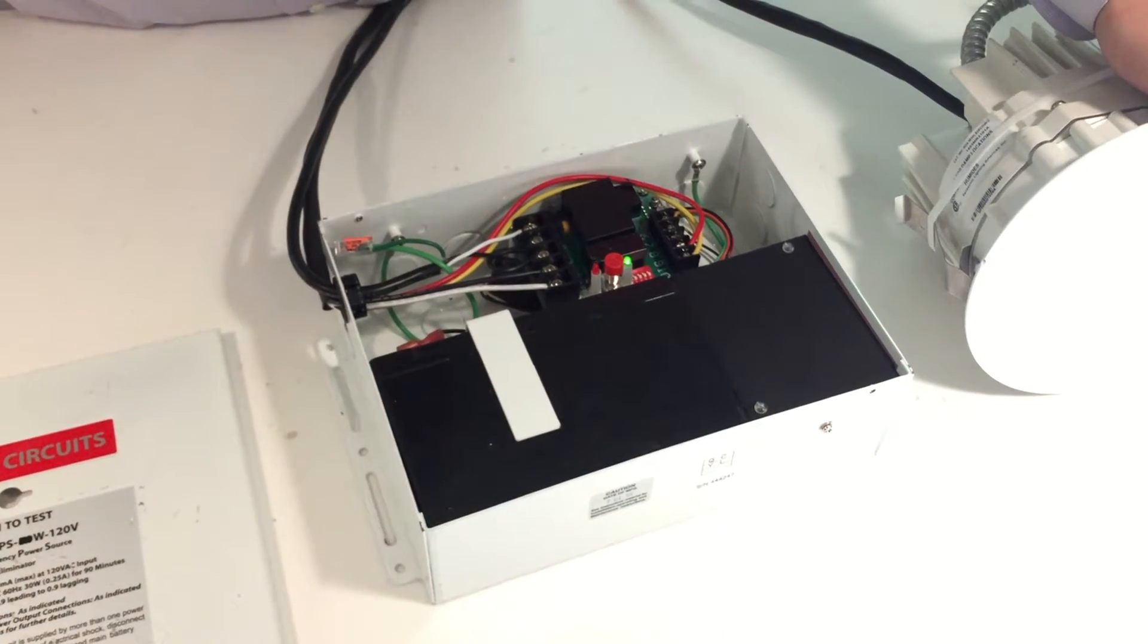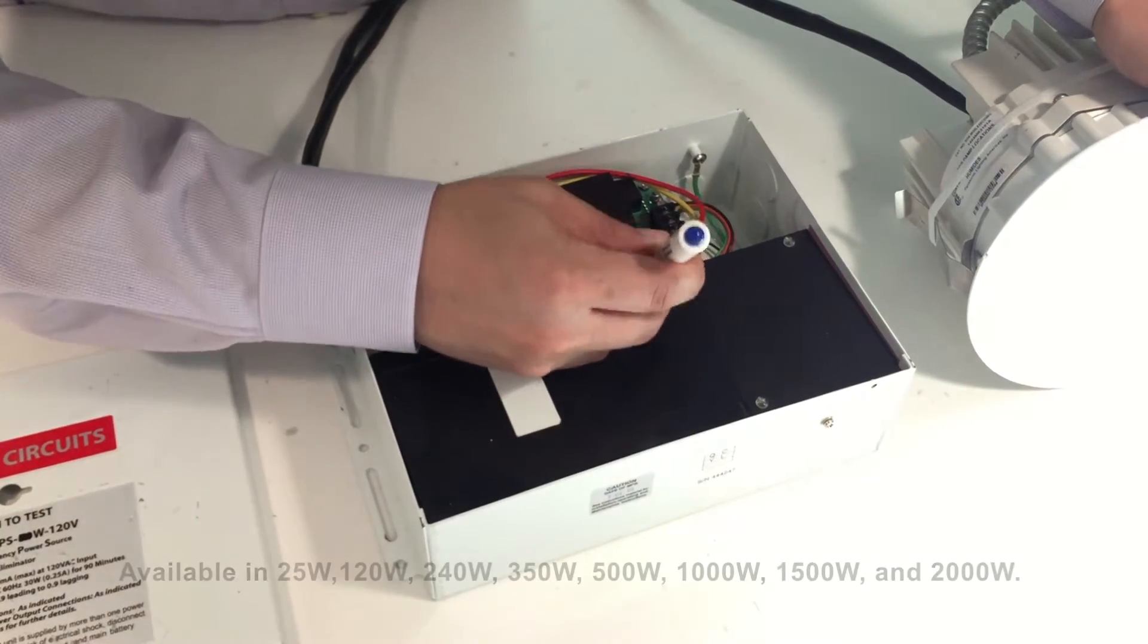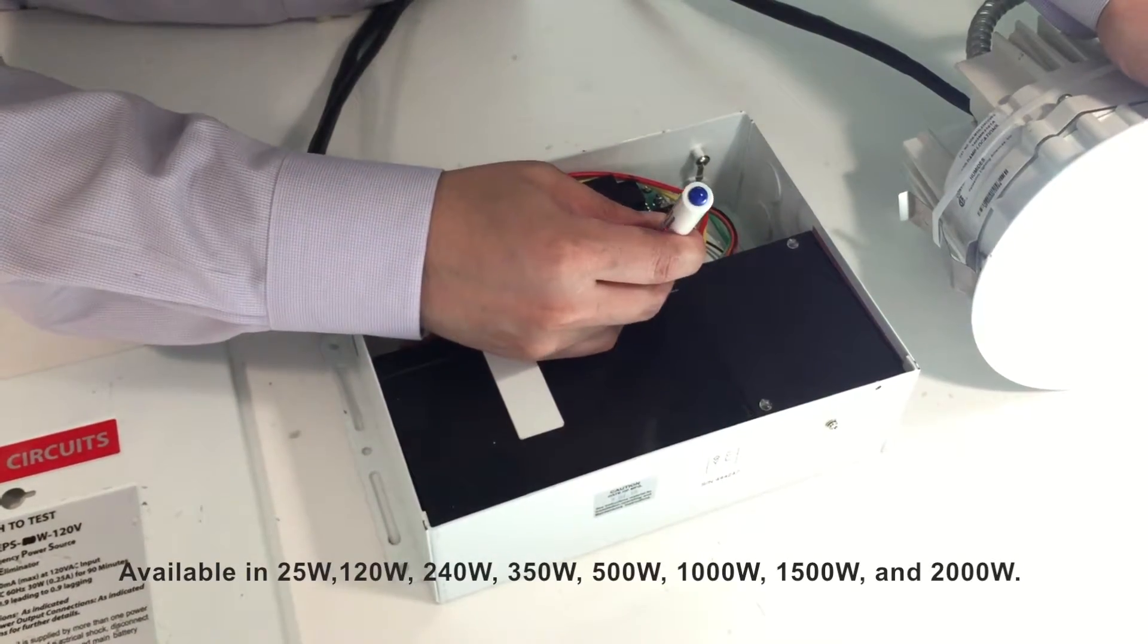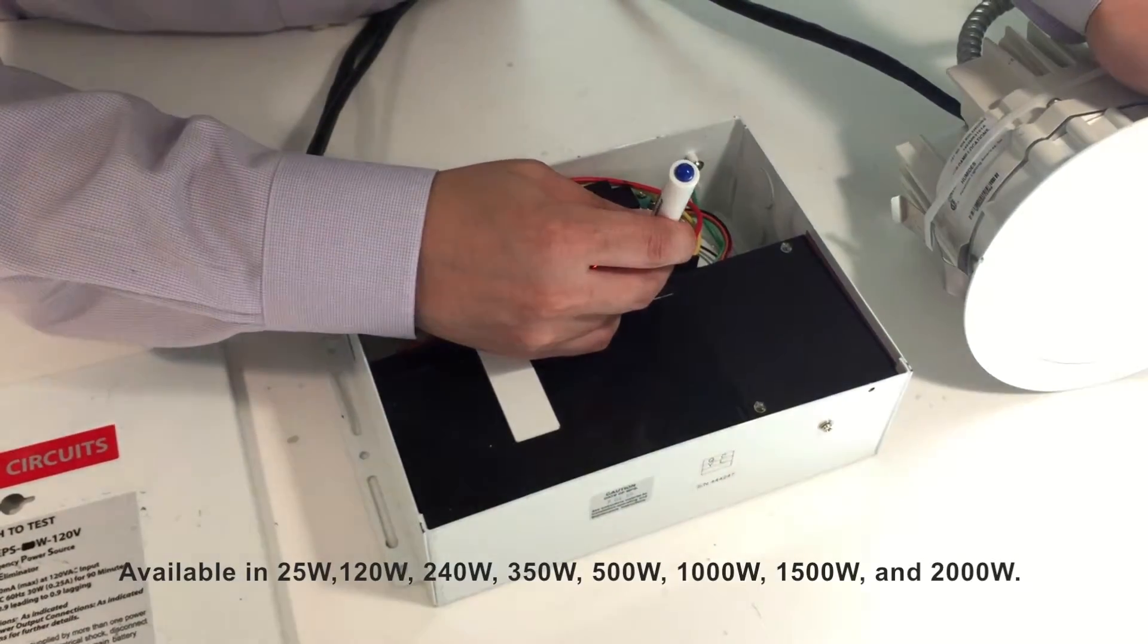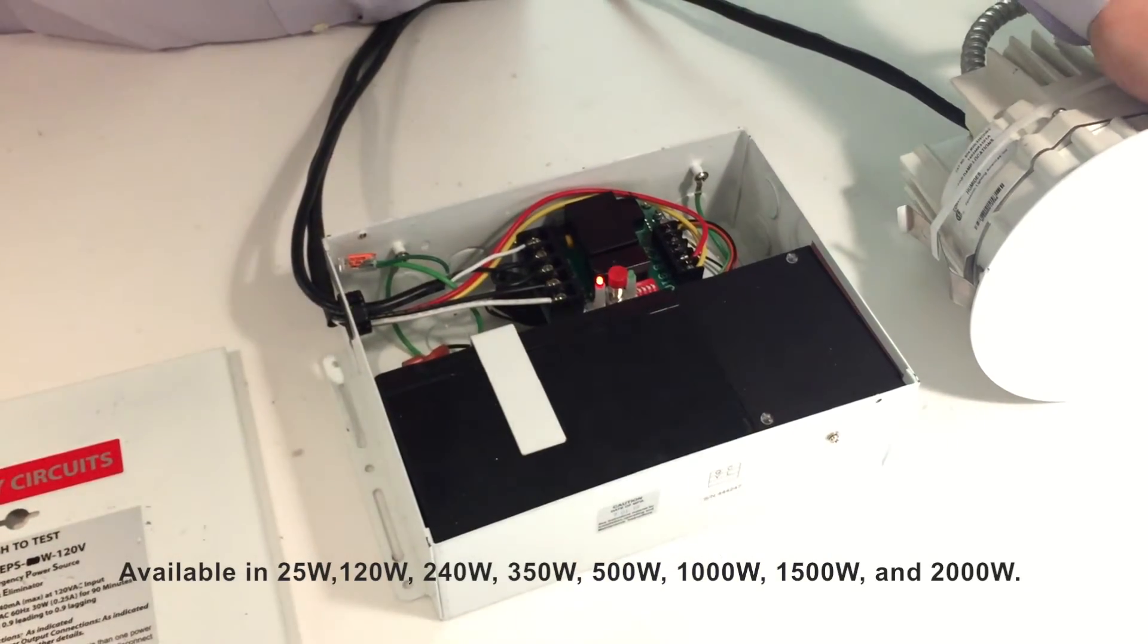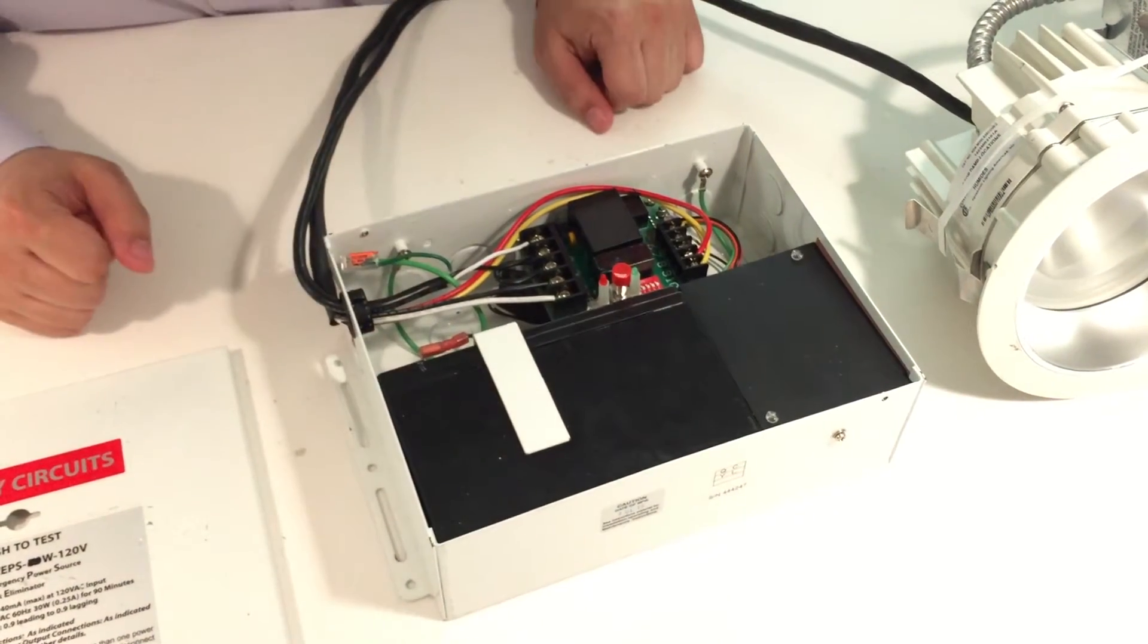With emergency lighting inverters it's as simple as figuring out what the wattage of your LED fixture is and you can put multiple LEDs on a single inverter. We offer inverters from 25 watt to over 2000 watts. With 2000 watts, trust me, you can fit a lot of LEDs on there.